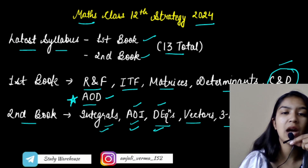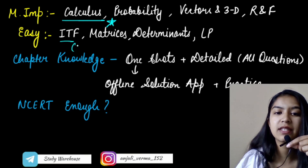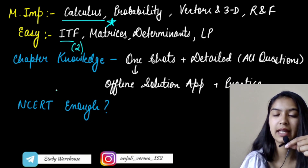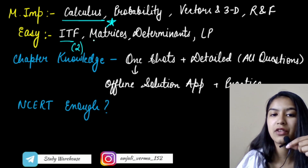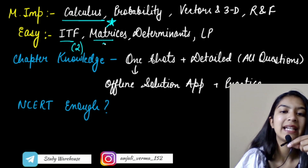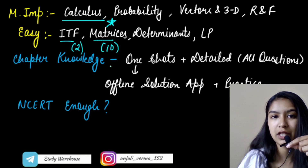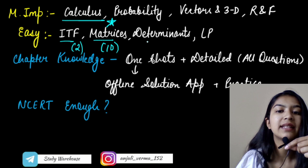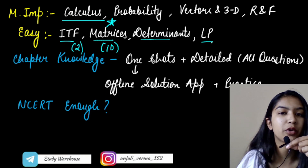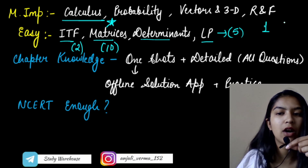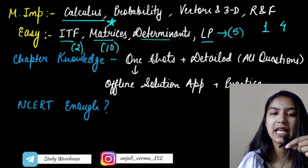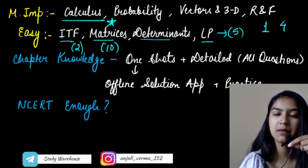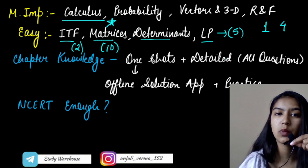The easiest chapters are Inverse Trigonometric Functions — there are only two-mark questions from this since there is only one exercise in our syllabus. Matrices is a very simple chapter, like in ICSE it is taught in class 10th. Then we have Determinants and Linear Programming — five marks will come from this, one from MCQ and four marks from the long question. You just need to plot a graph — very simple. Check the one-shot, there are many questions practiced.